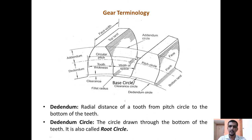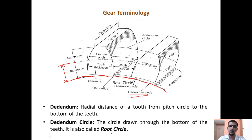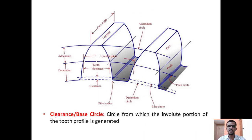Similarly, dedendum is the radial distance of the tooth from the pitch circle to the complete bottom of the teeth. The circle that passes through the bottom of the teeth is called the dedendum circle, and the dedendum circle is also called the root circle.